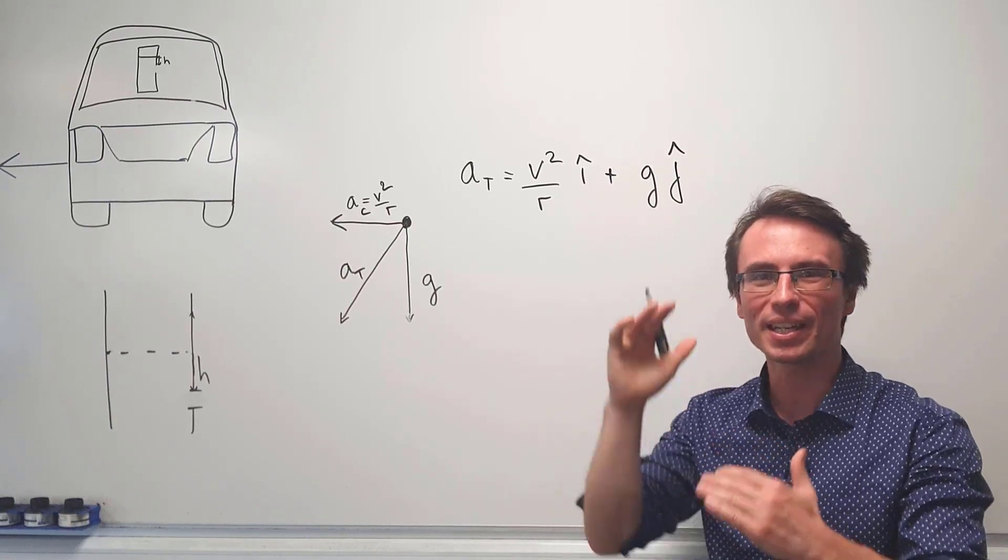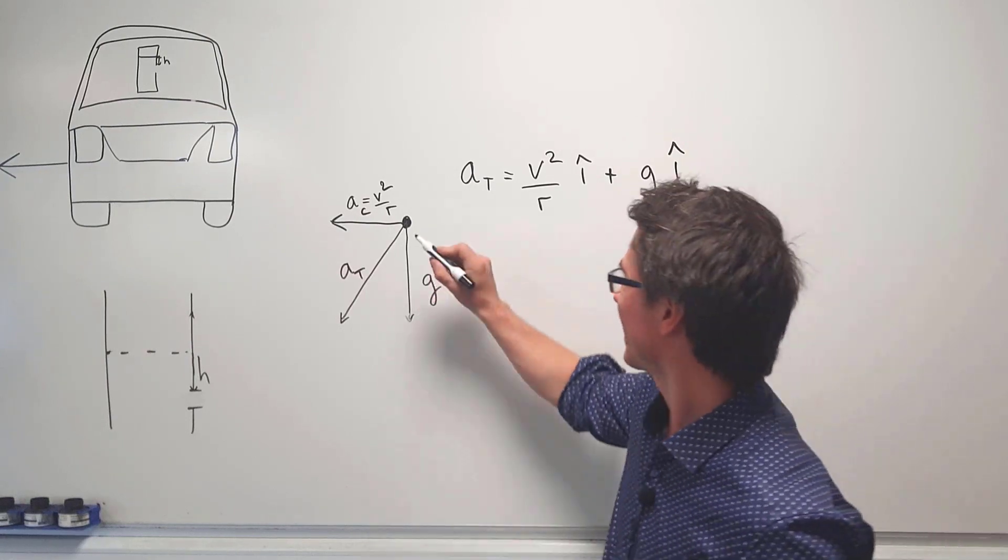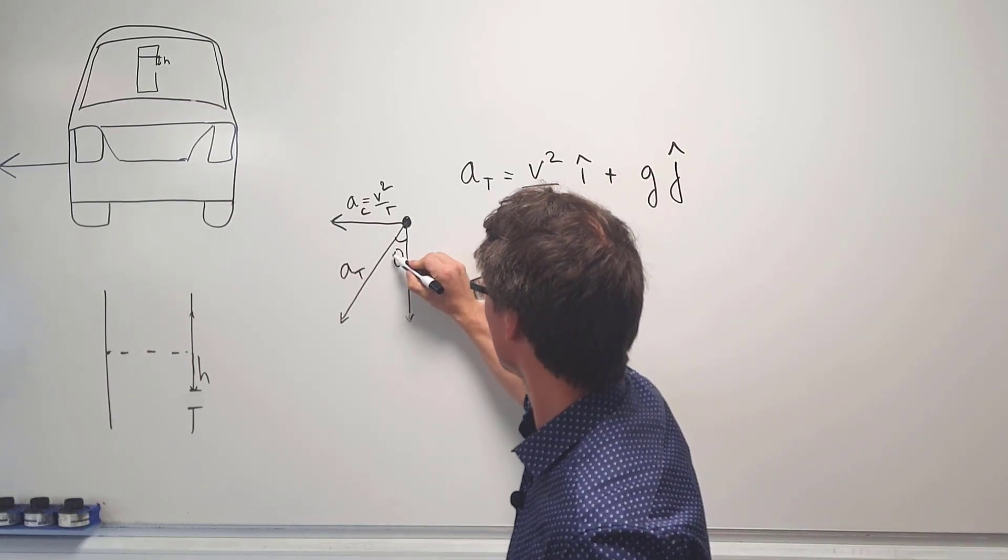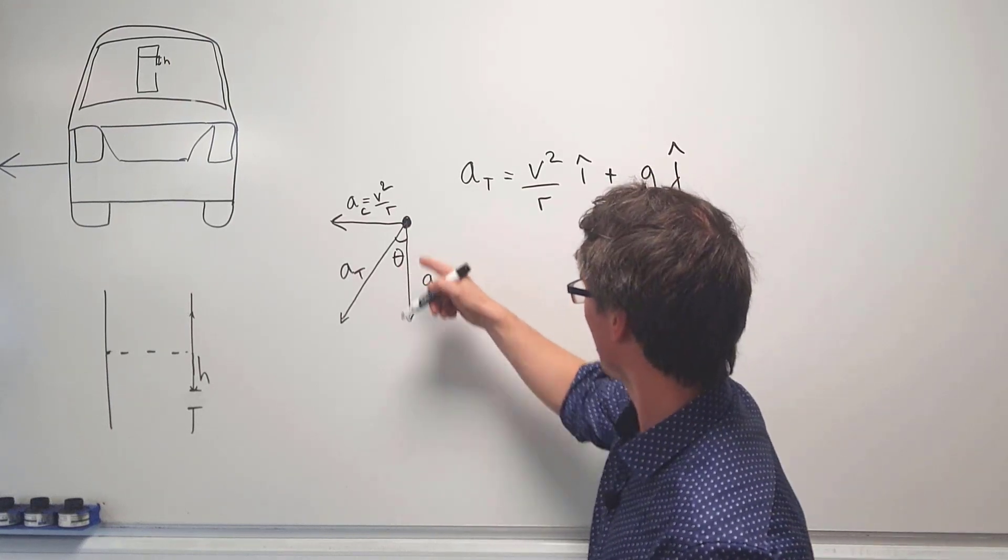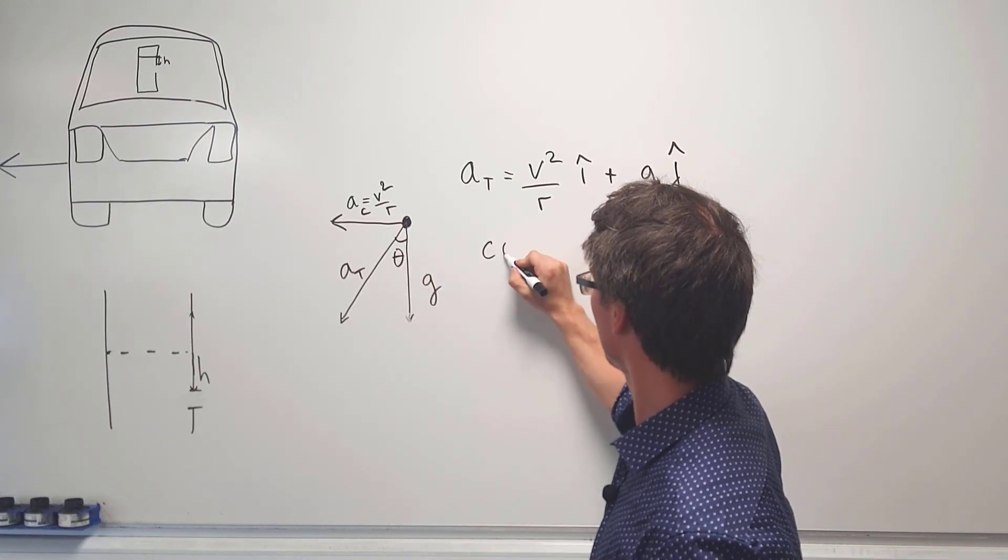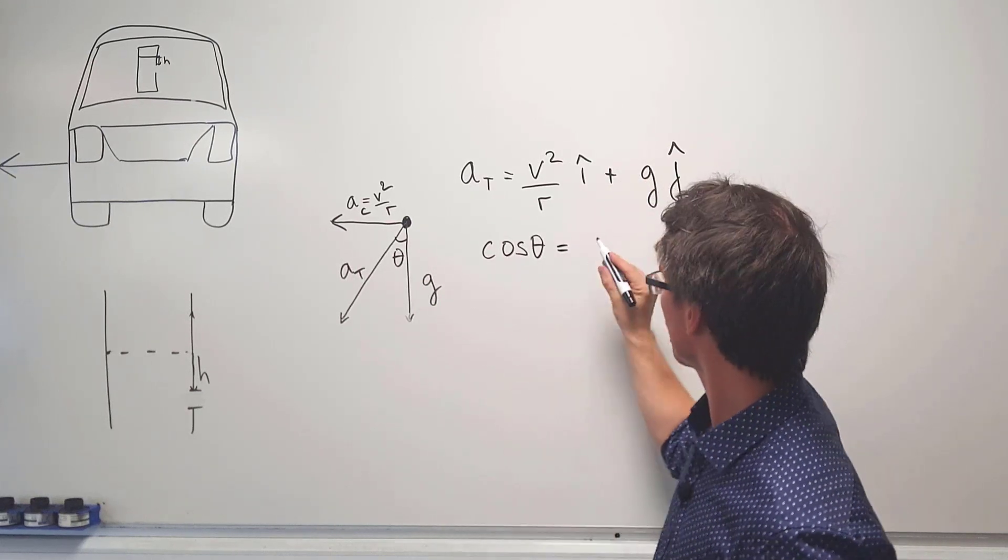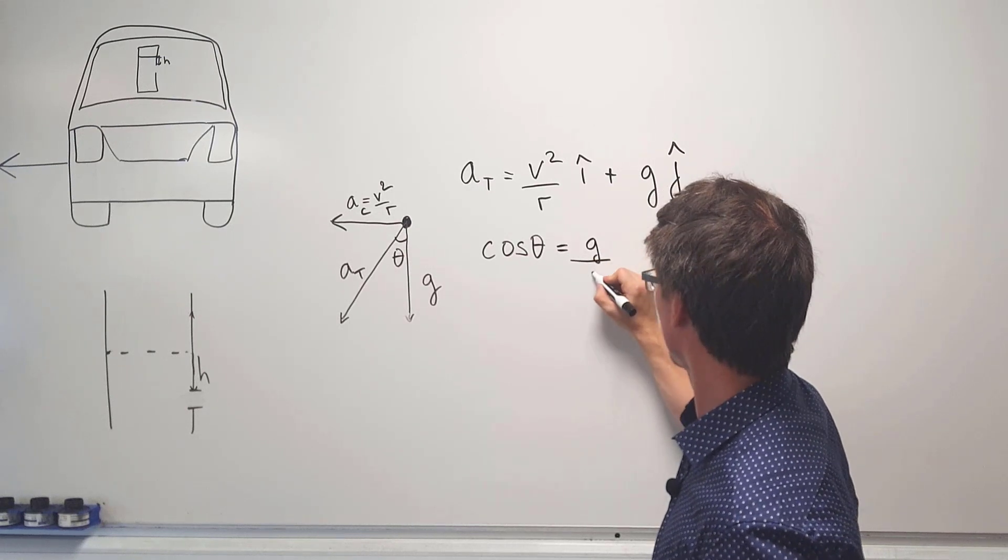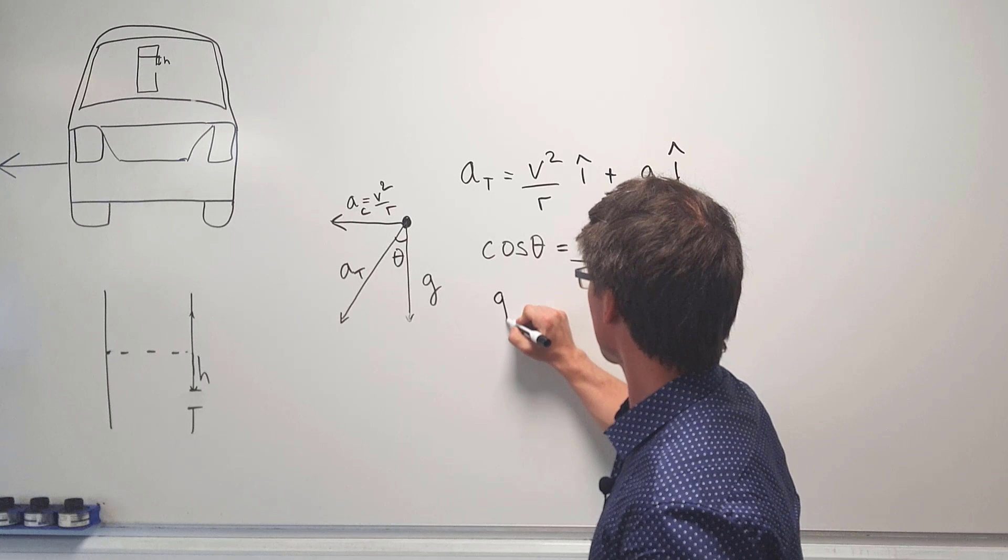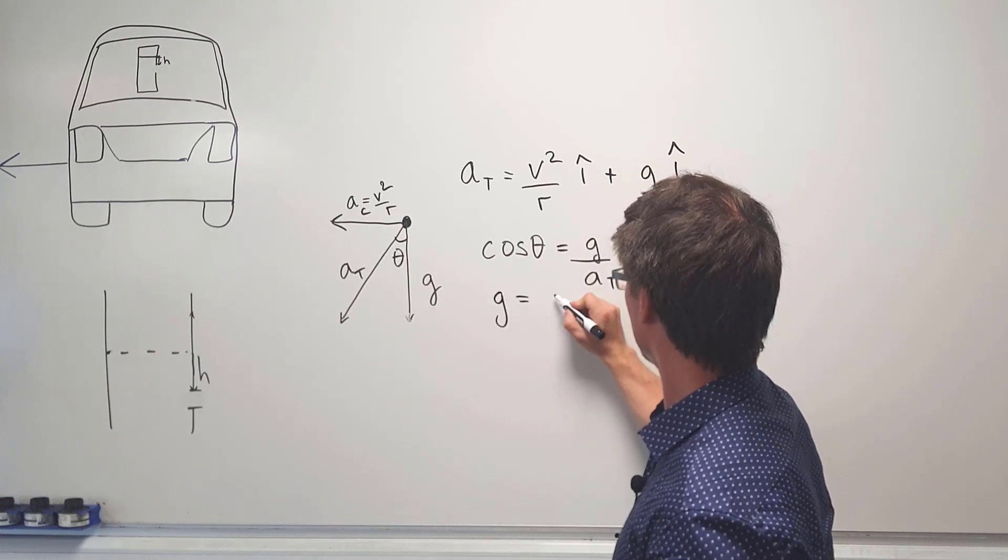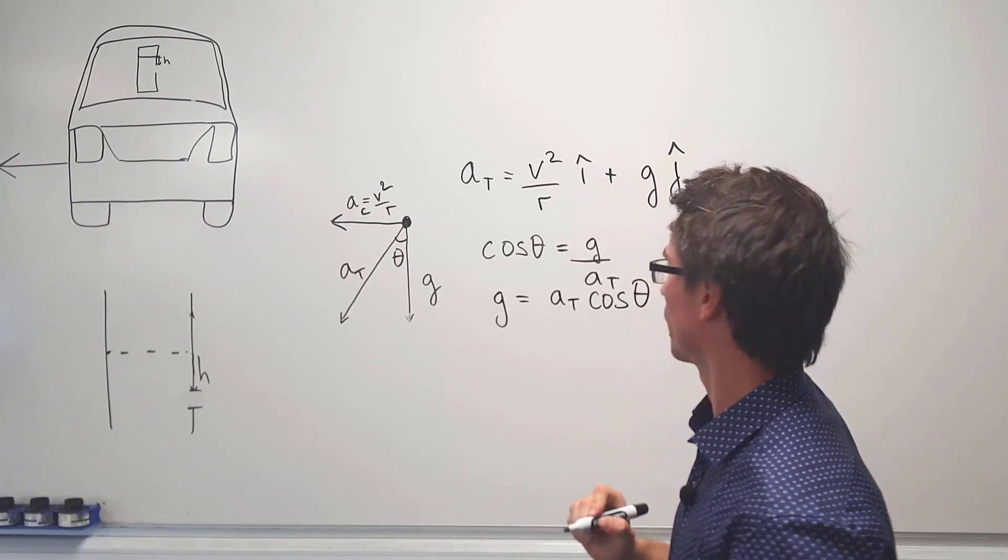The sign here can vary depending which direction you choose to be positive and negative. Let's take this angle here to be theta and now let's do some simple trigonometry. So let's take the cosine component. We know that cos theta is adjacent over the hypotenuse, so that's going to be just G over the total acceleration, meaning that G will just be equal to AT multiplied by cos theta.